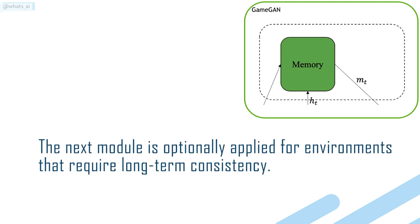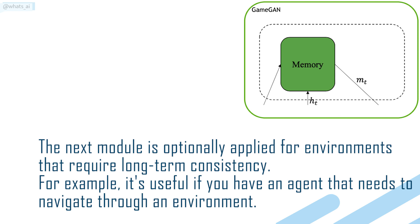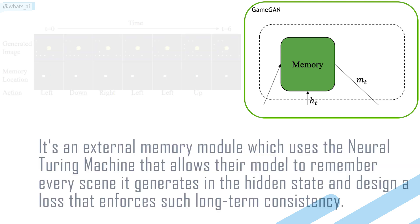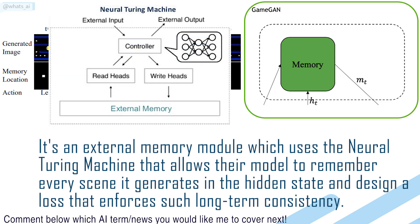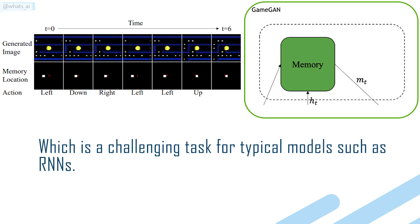The next module is optionally applied for environments that require long-term consistency. For example, it's useful if you have an agent that needs to navigate through an environment — this environment should not change when the agent comes back to the same location a few moments later. It's an external memory module which uses the neural Turing machine, allowing the model to remember every scene it generates in the hidden state and design a LSTM that enforces such long-term consistency, which is a challenging task for typical models such as RNNs.